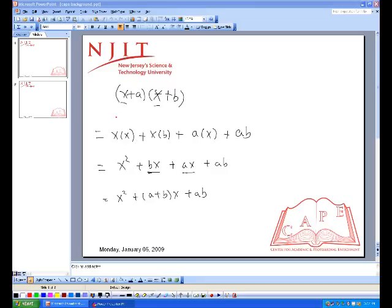Remember, the first two terms is for F in FOIL. The second, this is outside terms, x and b. And a and x is the inside term. And ab is the last two terms, which is L. So, the method is FOIL. F-O-I-L. Might be helpful.